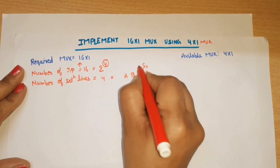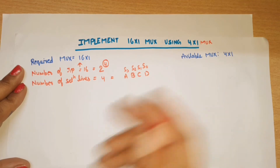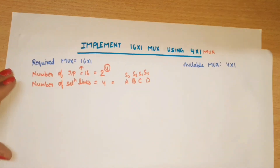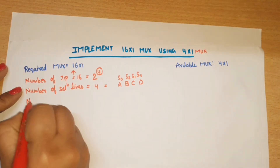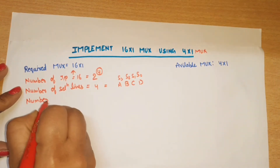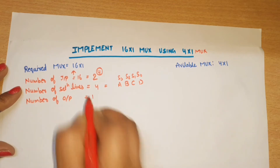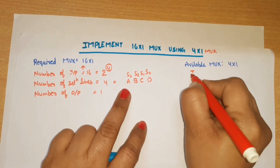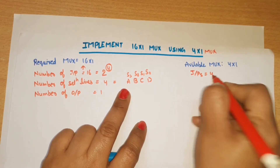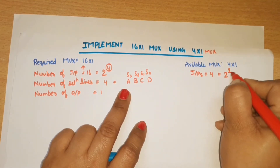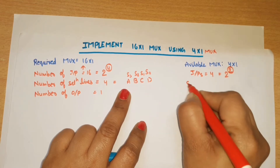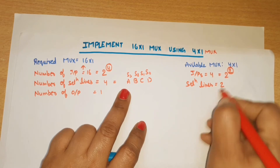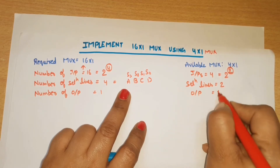These are S0, S1, S2, S3 — you can write them as S3, S2, S1, S0 or A, B, C, D as per your choice. Next, the number of outputs: in this case how many inputs are equal to 4. 4 can be written as 2 raised to the power 2, meaning 2 selection lines are required, and 1 output line.